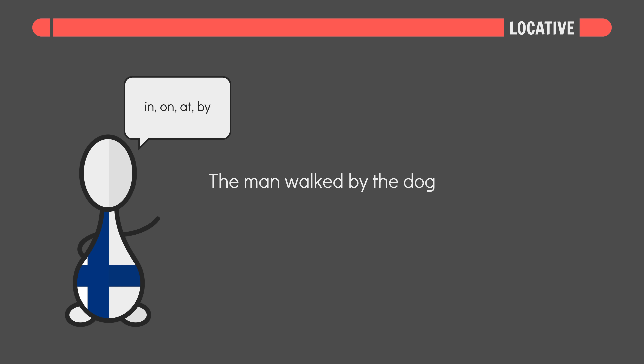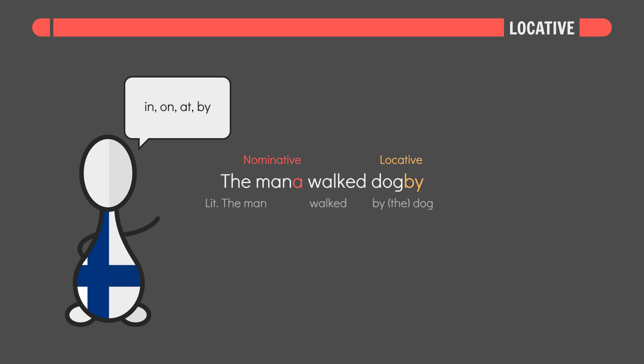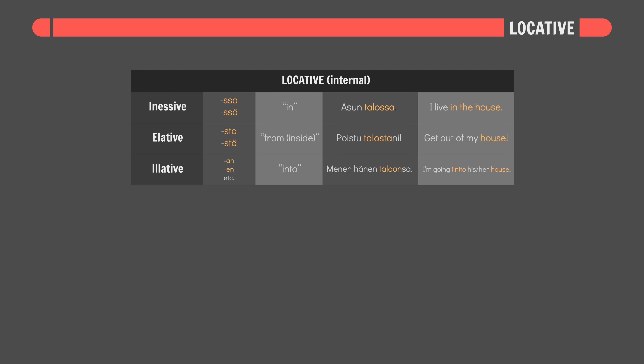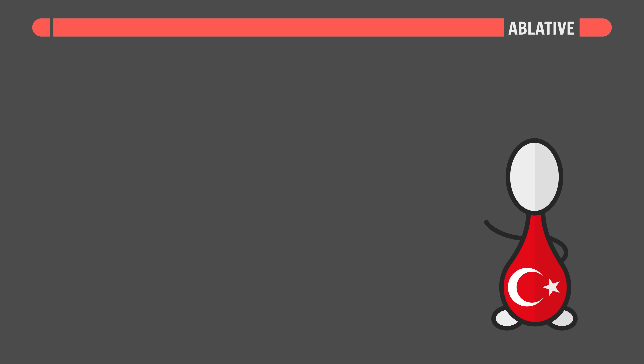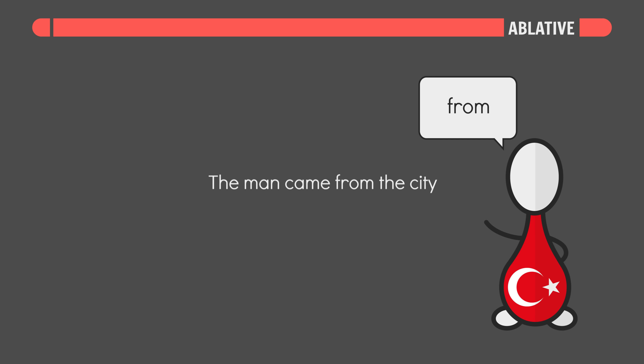So 'the man walked the dog' will become 'the man walk dog-by.' Finnish actually goes a step further and splits its locative case into six separate cases — three internal and three external. Turkish has an ablative case that encodes, amongst other things, motion away from something — think 'from.' So 'the man came from the city' becomes 'the man came city-ab.'